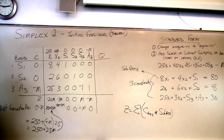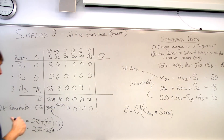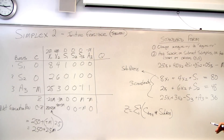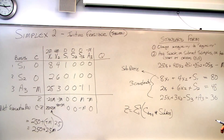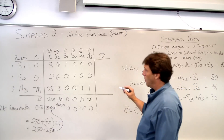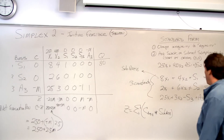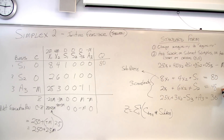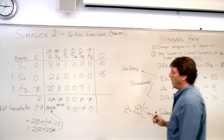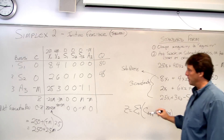Next, we fill in our Q values. Q is simply the quantity we have left of each constraint. We haven't used any s1, so we have 80. We haven't used any s2, so we have 48. We haven't used any of our third constraint, so we have 36.